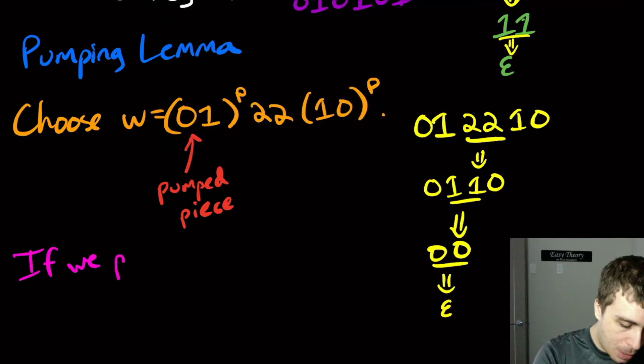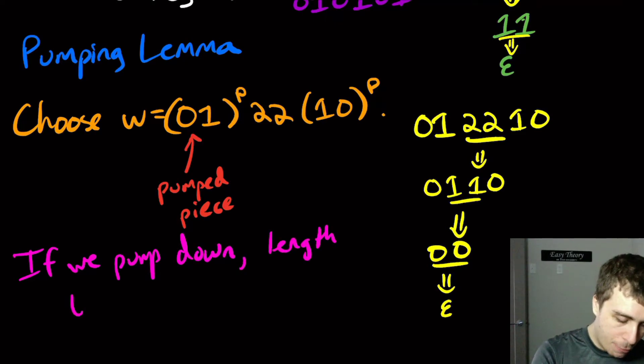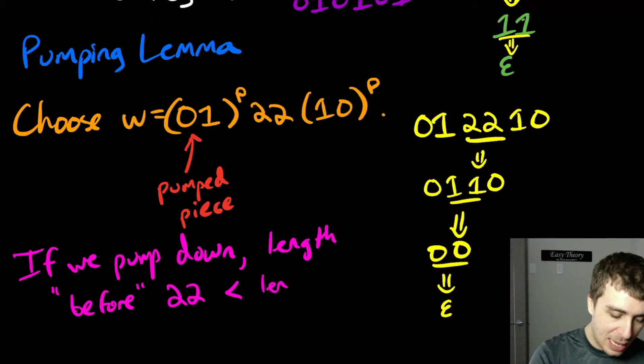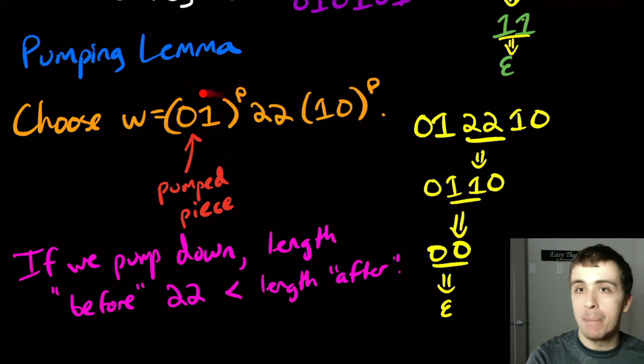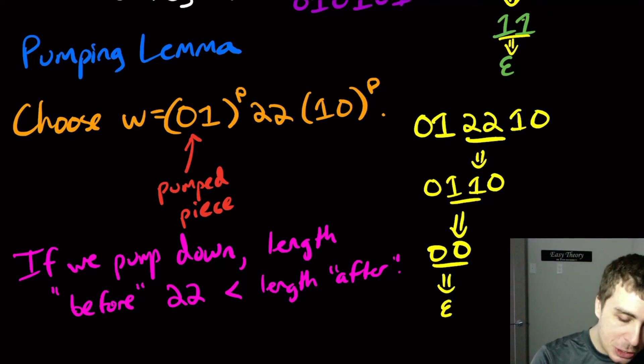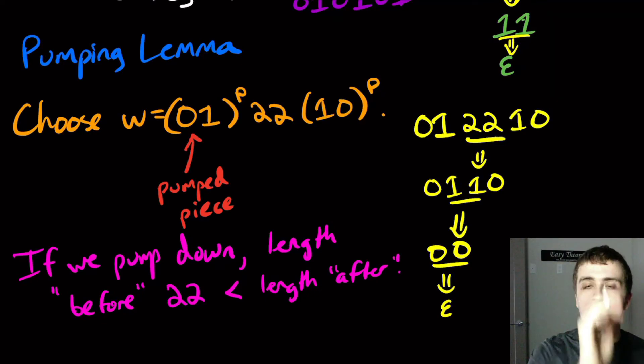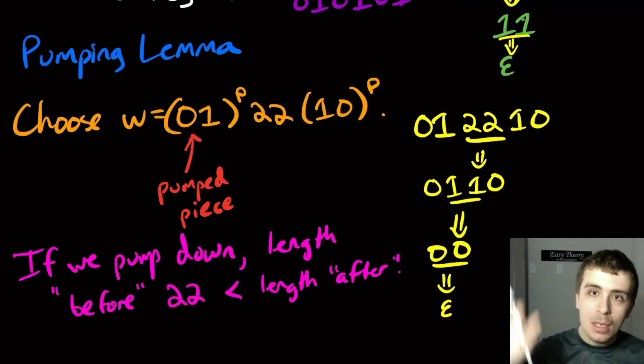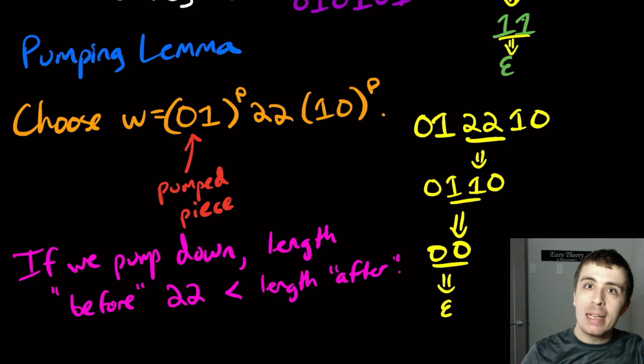So if we pump down, then the length before, quote unquote, that two, two in the middle is less than the length after. Right? Because they were the same before, we're only pumping things away from the first part, and so its length must decrease. So think about what the string structure is. So it's alternating between zeros and ones at the beginning and then ones and zeros at the end. So if we take away one of those characters, then that means that it must match exactly with one character on the other side. Because think about how we were able to show that this string was contractible.